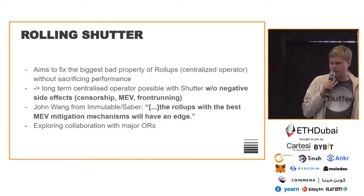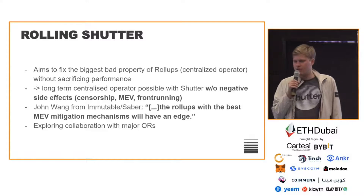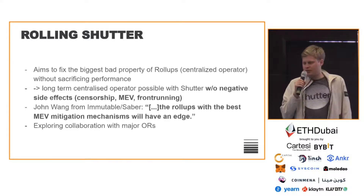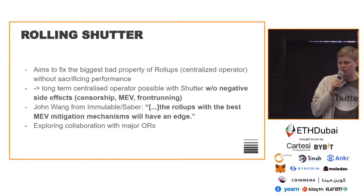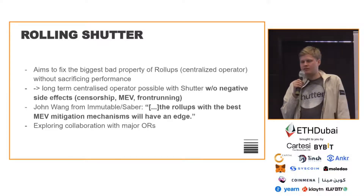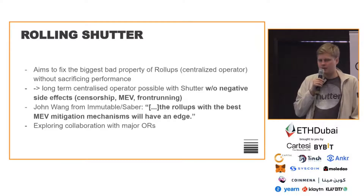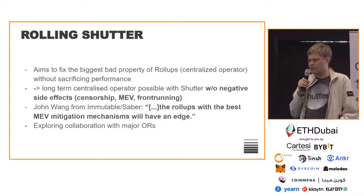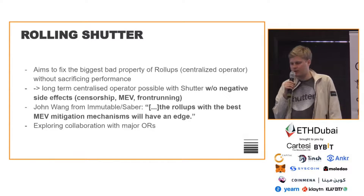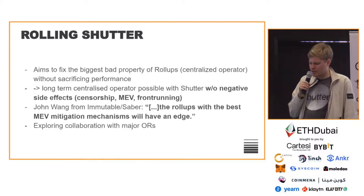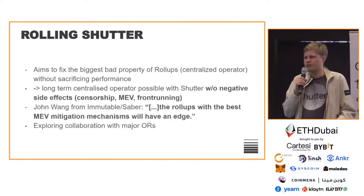Rolling Shutter, implemented into the rollup, ideally makes it possible to maintain a long-term centralized rollup operator without the negative side effects. Currently, a centralized operator can extract MEV and censor, but with Shutter, hopefully those side effects go away. To quote John Wang from Immutable: 'The rollups with the best MEV mitigation mechanisms will have an edge.' We think this could be a value add for any rollup. We're exploring and talking to a number of optimistic rollups to see how this goes.